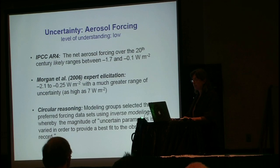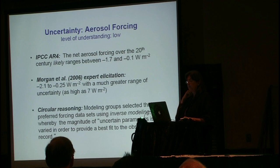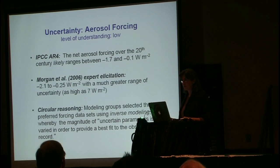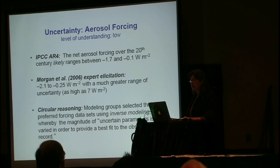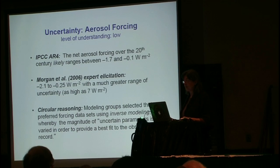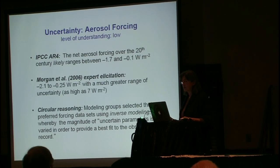If we go to aerosol forcing, the IPCC AR4 concluded that over the 20th century aerosol forcing likely ranges between minus 1.7 and minus 0.1 watts per meter squared. There again we see the magic 1.7, which if it were 1.7 would have exactly canceled out the CO2 warming. At the same time the AR4 assessment was underway, Morgan et al. conducted an expert elicitation on 24 aerosol experts, including the IPCC's own authors on this section. They came up with a substantially larger range — minus 2.1 to minus 0.25 watts per meter squared, with uncertainty as high as 7 watts per meter squared. This is a huge uncertainty.